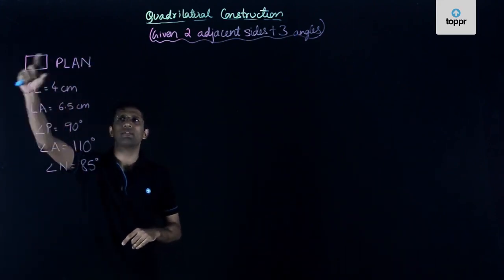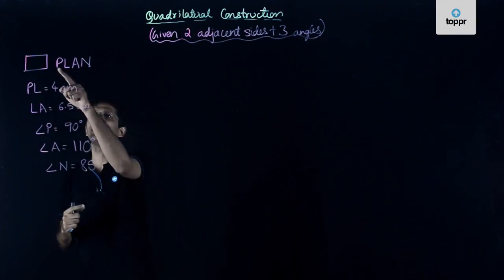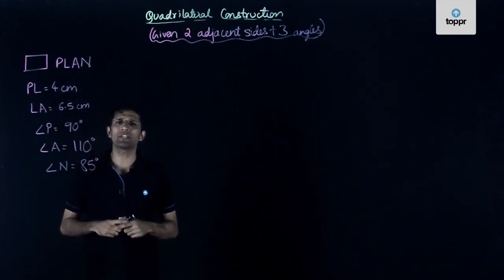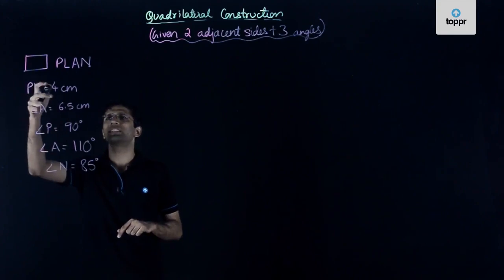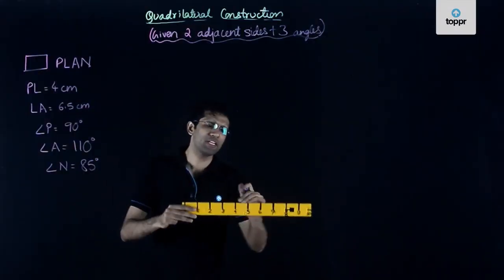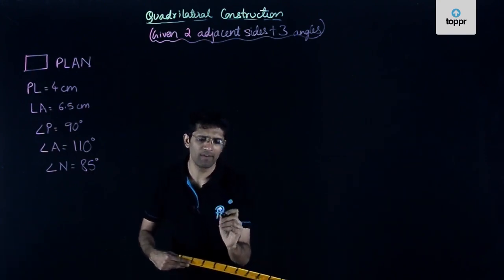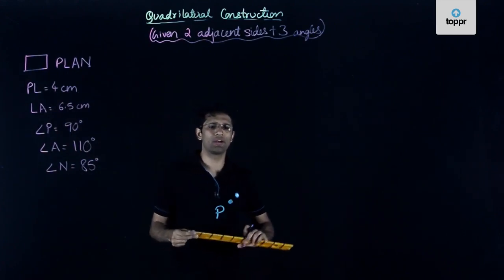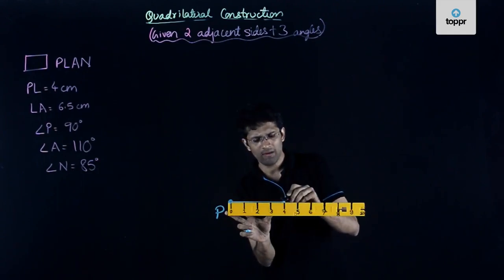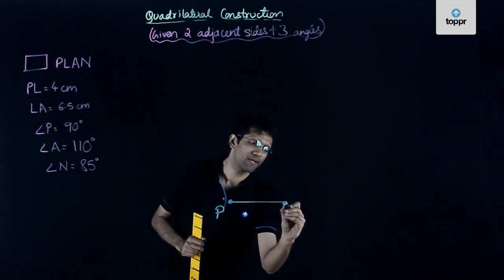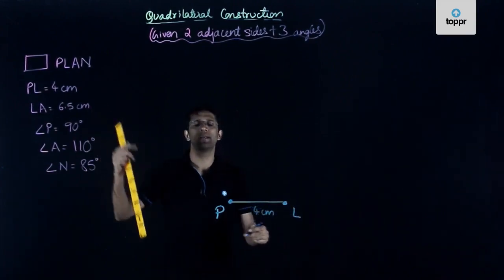In this specific problem we have to draw quadrilateral PLAN — the vertices are P, L, A, and N. The information available to us is PL is equal to 4 centimeters. So let us start with this line segment PL. I fix my point P somewhere here and draw a line segment PL measuring 4 centimeters, so the point L will be somewhere over here. We have now located the points P and L, and the distance between them is 4 centimeters.